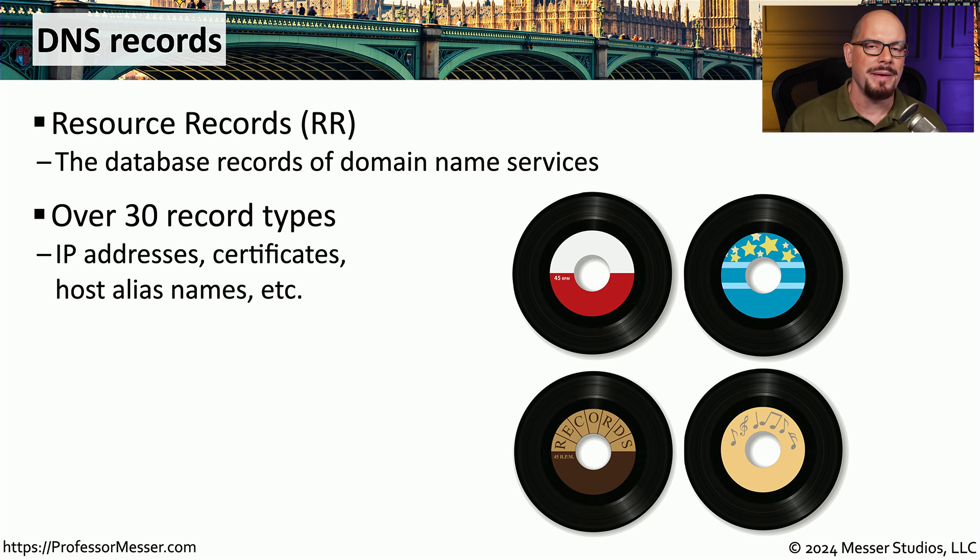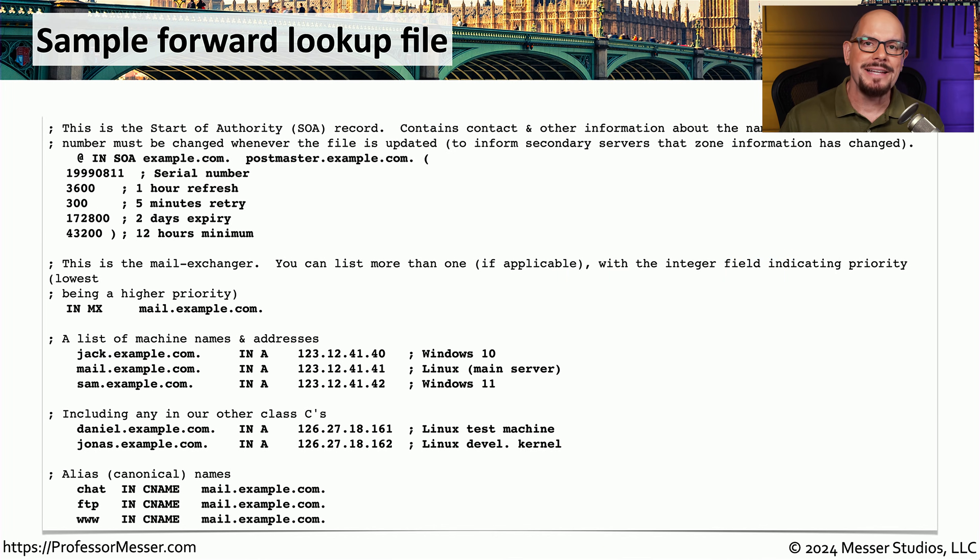It might contain information about a certificate that we could use to validate DNS information. It may contain aliases of hostnames that are stored within the DNS database, or one of many other record types. On the screen is a DNS configuration file. You'll notice there are a lot of different types of information contained within the DNS file, and in this video, we'll step through a number of these more popular DNS records.